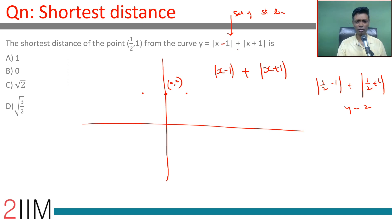I'm going to break this into three segments. When x > 1, this becomes (x - 1) + (x + 1), which equals 2x.